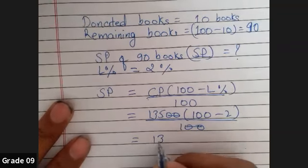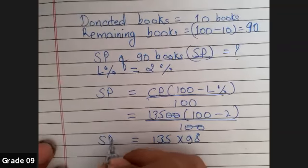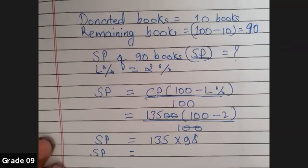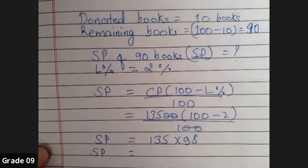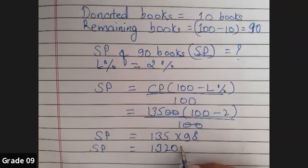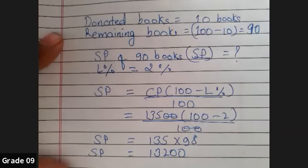So 135 into 98. This is the selling price. One of you can help me with this: 135 into 98 is how much? 13,200. Okay, now before you decide anything, definitely this is the answer.